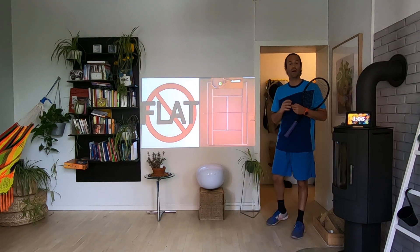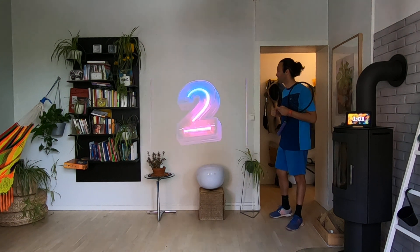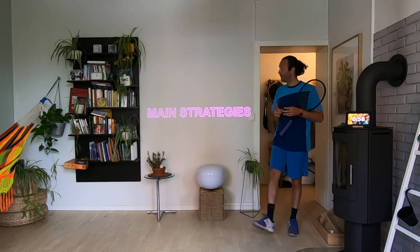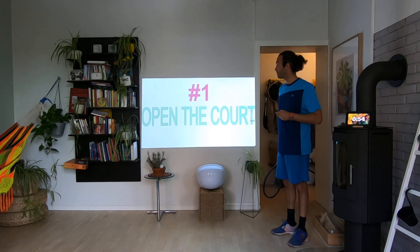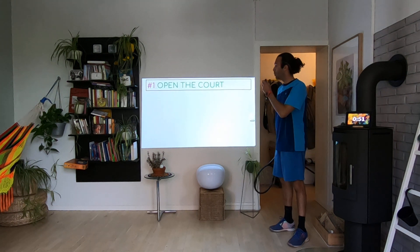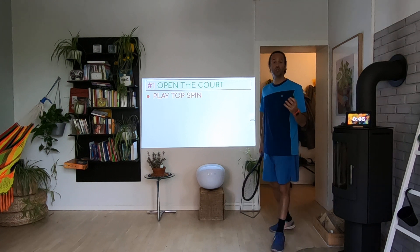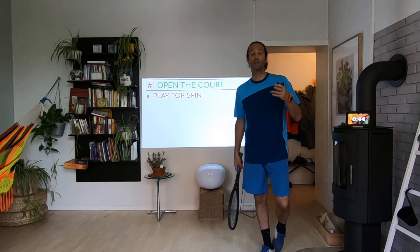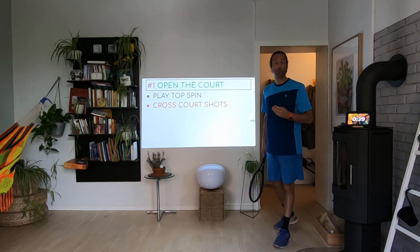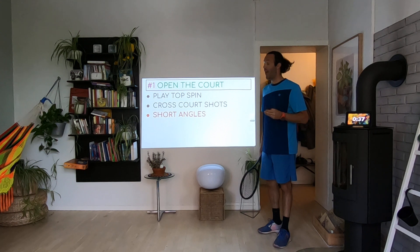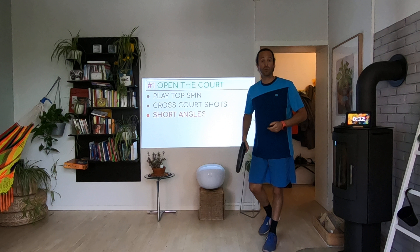You will see that you will have less control. So instead of flat, we play topspin. There are two main strategies when you are with the wind. The first one: open the court. Which tactics are we going to use? Play topspin — topspin shots are opening the court more than flat or slice shots. Use cross-court shots. And if you are able, try to play the short angles to the opponent.